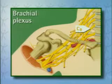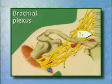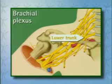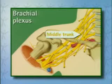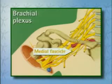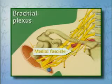Finally, the ventral roots of the 8th cervical nerve and the 1st thoracic nerve form the lower trunk, which together with portions of the middle trunk, becomes the medial cord.